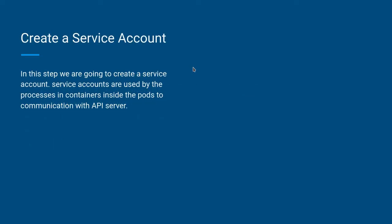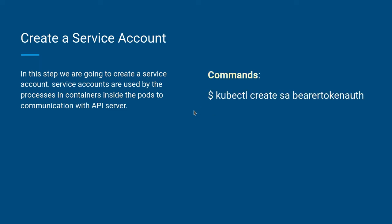As a first step, we need to create a service account. Service accounts are used within containers or processes within the Kubernetes cluster to access the API server resources. To create a service account, the command is: kubectl create serviceaccount and then the name of the service account. You can use any name, just remember what name you give so you can utilize it in further steps.